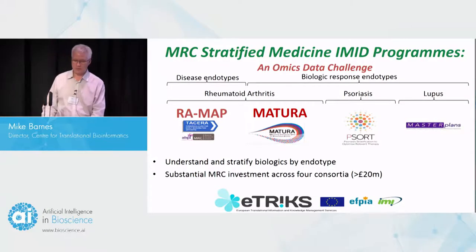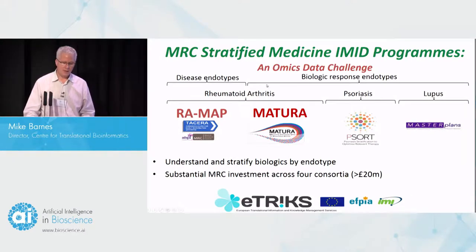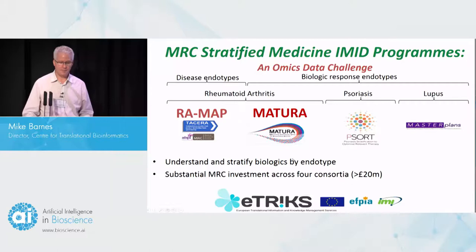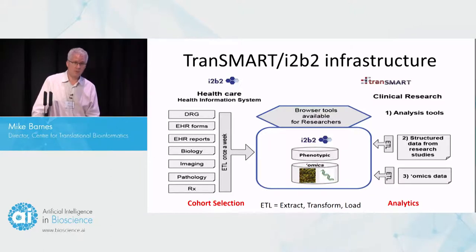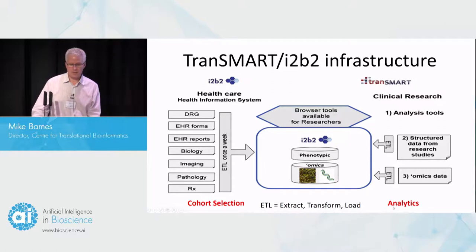The stratified medicine projects I'm working on include four projects: two working on RA — RA-MAP and Matura — one project working on psoriasis, and one on lupus. Three of these are working specifically on biologic response endotypes, and one's working on disease endotypes. By applying a shared infrastructure across projects with many common objectives, we've been able to build real synergies and think about how to compare across diseases. We're using TransMart for omics and clinical trial data, and I2B2 for patient registry and health record data.